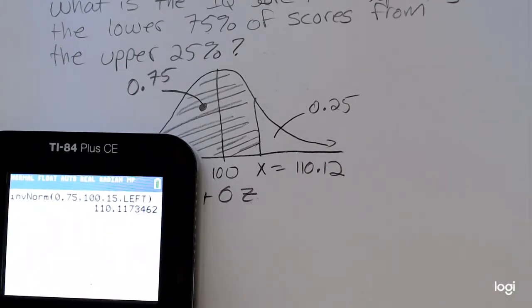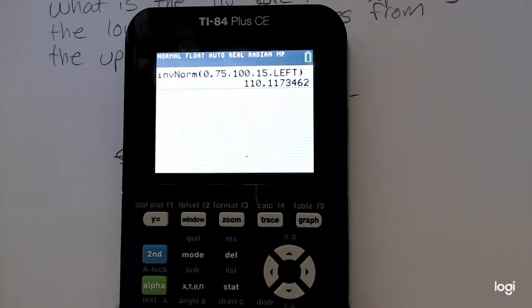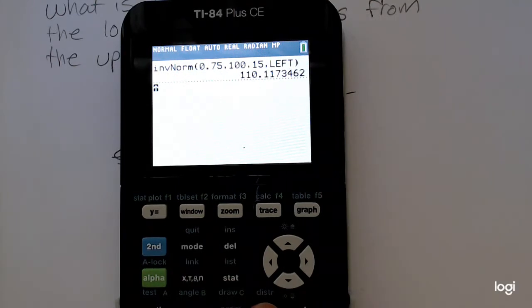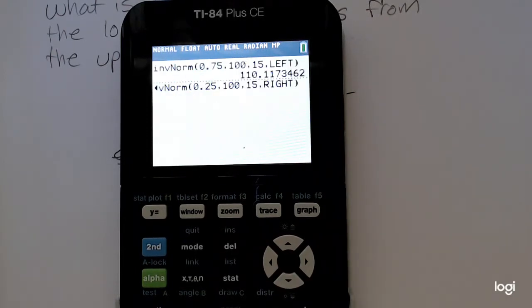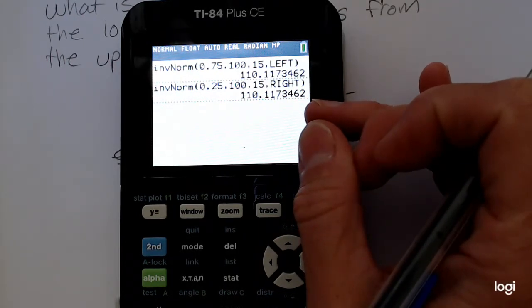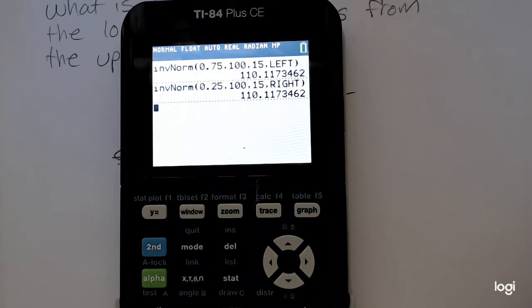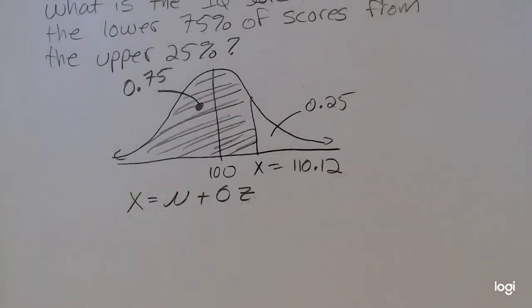And we expected that x-value to be greater than 100 because it is above the mean. If you have a newer TI calculator, going back to that inverse normal distribution, I could have put in 0.25 and changed that tail area to right, and you'll get the same answer. Because if I have 25% in the right tail, I would have 75% to the left of it. So when you use your calculator, you don't have to convert the z-score back to an x-value.